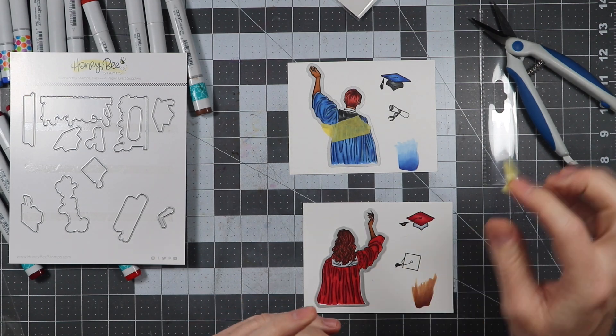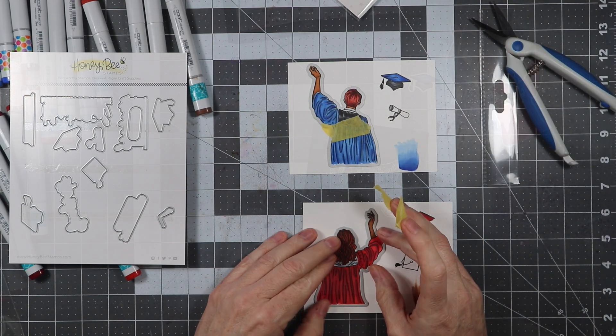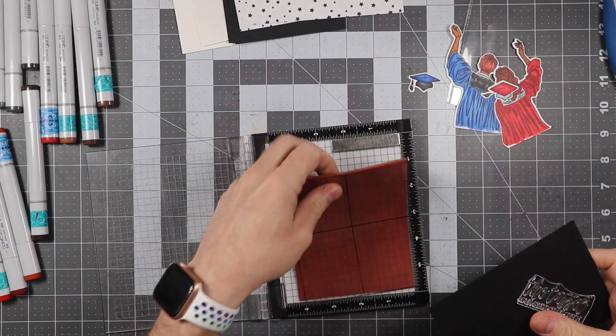So we're going to go ahead and get this guy taped down, and then we'll go ahead and put it through the die cutting machine, and we'll have them cut out.